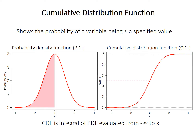Before discussing the KS test, we need to cover something called a cumulative distribution function, or CDF. A CDF, shown on the right, indicates the probability of a variable being less than or equal to a specified value. The horizontal dashed line indicates a probability of 50%, or 0.5. Reading down from where the function meets that line shows that 50% of the values in the data set are less than 0. The corresponding probability density function, shown on the left, corroborates that — half the area is indeed less than 0. The cumulative distribution function is essentially an integral of the PDF evaluated from negative infinity to whatever value x.